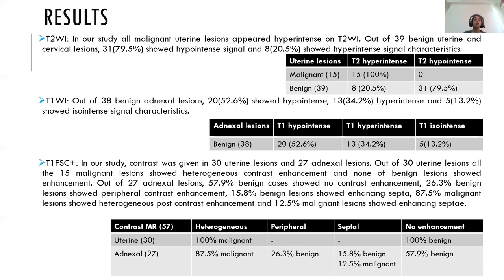On T1-FS post-contrast imaging, contrast was given in 30 uterine lesions and 27 adnexal lesions. Out of the 30 uterine lesions, all 15 malignant lesions showed heterogeneous contrast enhancement, but none of the benign lesions showed any enhancement. Of the 27 adnexal lesions, 57.9% benign cases showed no contrast enhancement, 26.3% benign lesions showed peripheral enhancement, and 15.8% showed enhancing septa. Of the malignant lesions, 87.5% showed heterogeneous post-contrast enhancement and 12.5% showed enhancing septa.